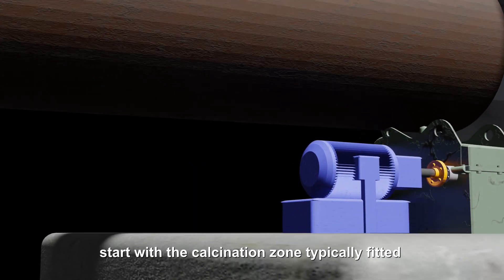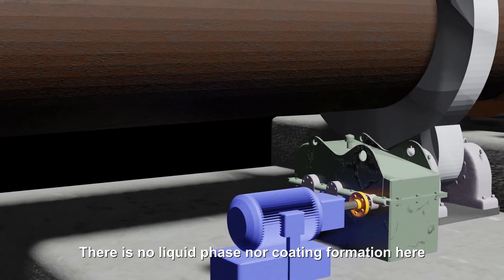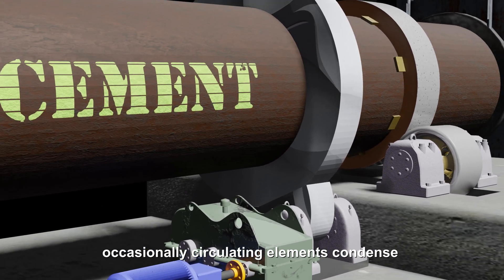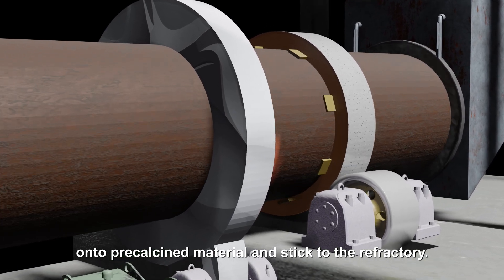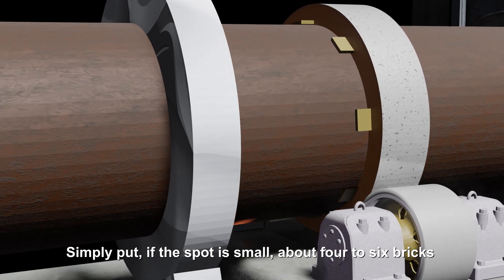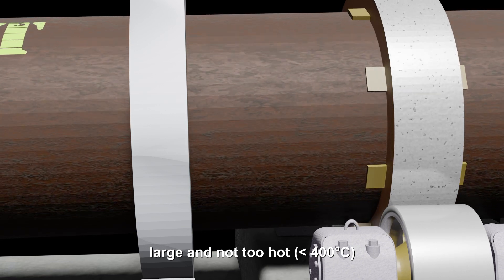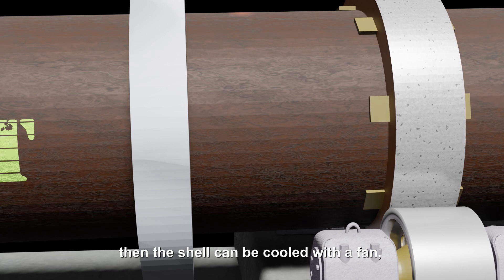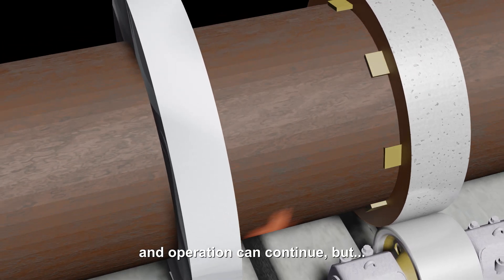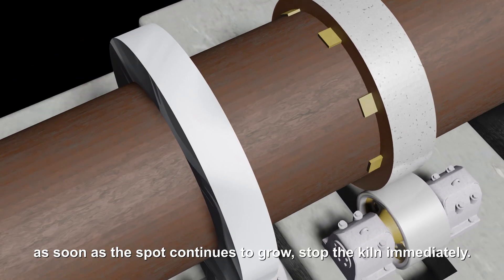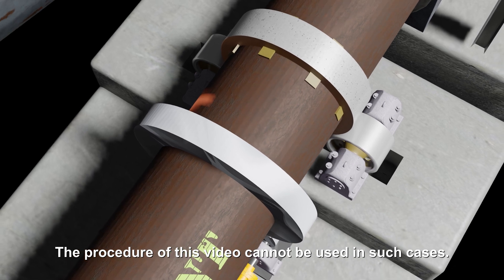Let's look at the hot spot locations and start with the calcination zone, typically fitted with high alumina refractory bricks. There's no liquid phase nor coating formation here. Occasionally circulating elements condense onto pre-calcined material and stick to the refractory. Simply put, if the spot is small, about four to six bricks large and not too hot, under 400 Celsius, then the shell can be cooled down with a fan. The main burner moved back 30 centimeters and operation can continue. But as soon as the spot continues to grow, stop the kiln immediately. The procedure of this video cannot be used in such cases.